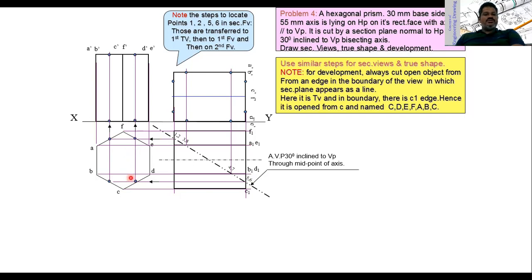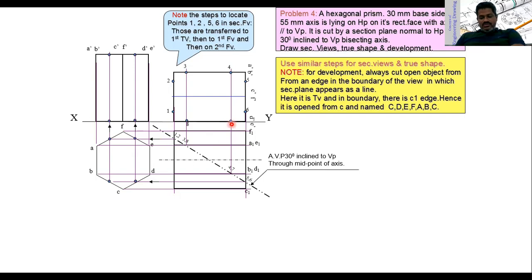Take the compass and locate points 1, 2 and 5, 6 in the front view. Points 7 and 8 lie at the bottom. Join all these points to get the sectional front view of the hexagonal prism when sectioned by a plane at 30 degrees to the vertical plane. This is the sectional front view, and the other is the sectional top view.